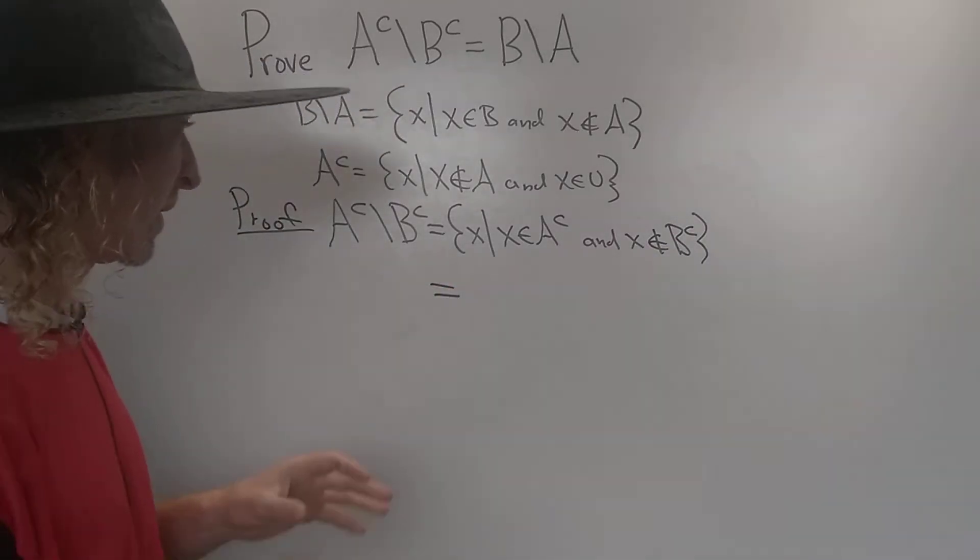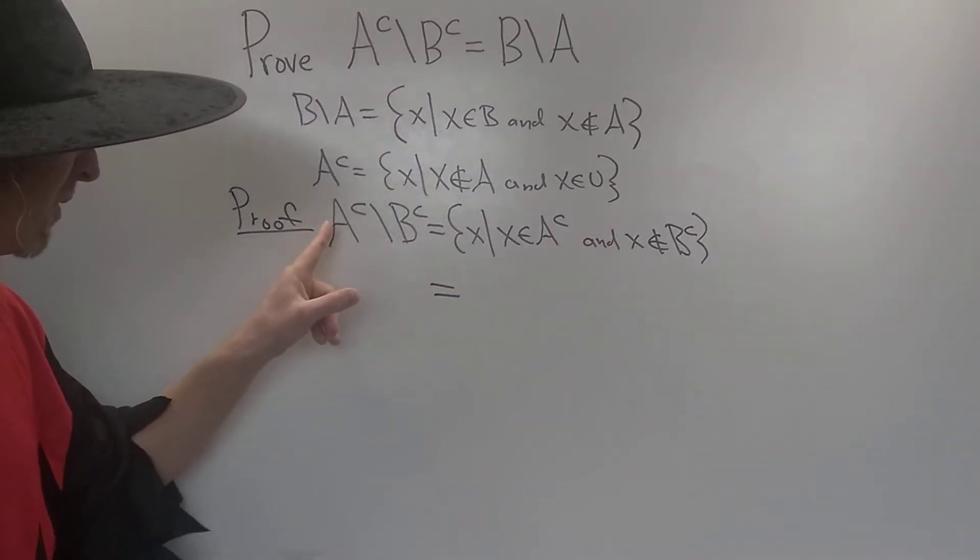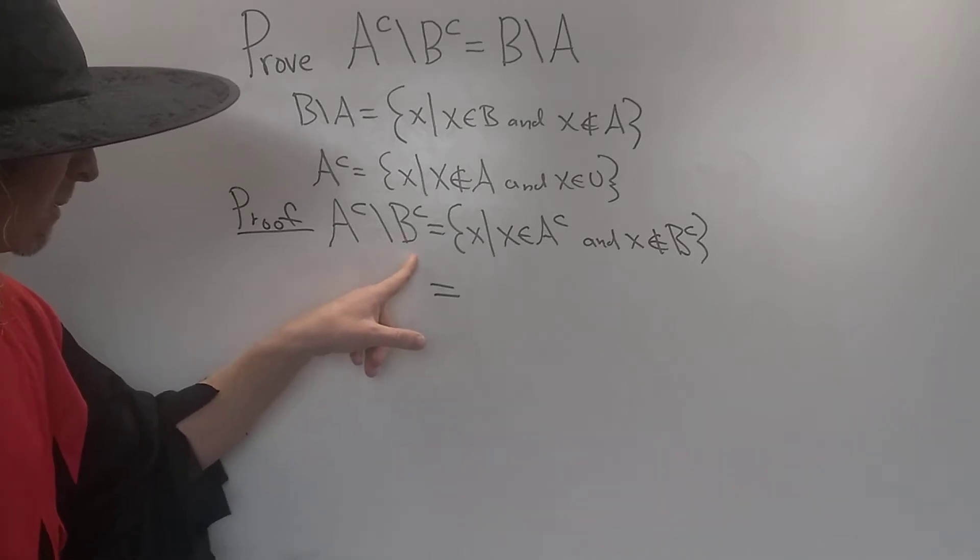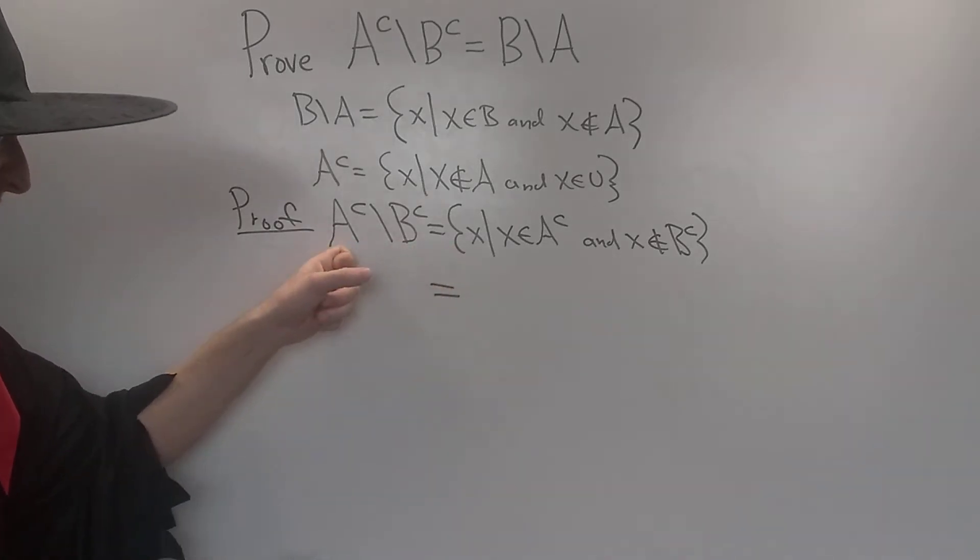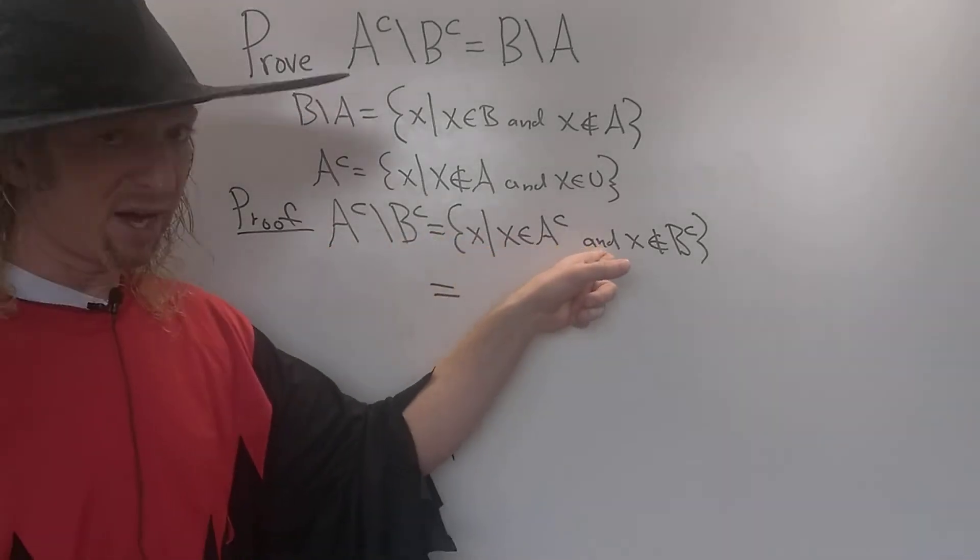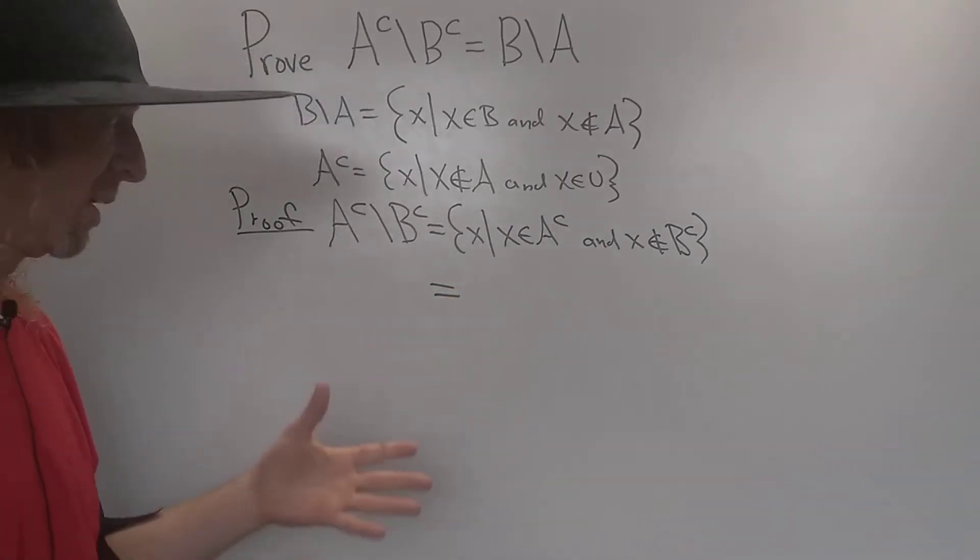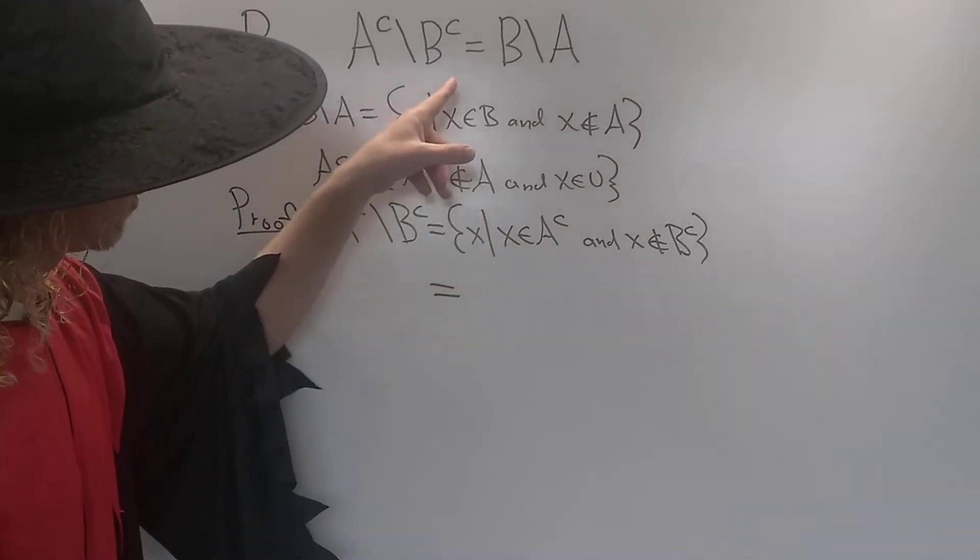So let's just pause here for a moment and recap what we've done. So A complement set minus B complement is the set of all X's such that X is here, but it's not in here. Instead of but, I use the word and, which is also acceptable.